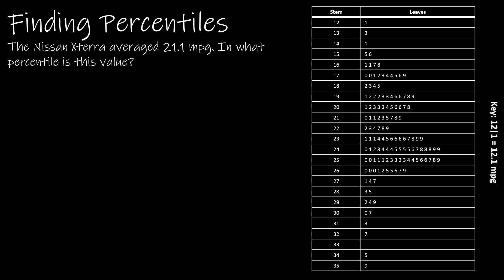Now we might instead be looking in reverse. In this one we have to find what is the percentile. In this case we're looking at the Nissan Xterra that averaged 21.1 miles per gallon. So let's take a look at 21.1—there are two of them. If there are two of them, I'm going to count starting from the beginning.